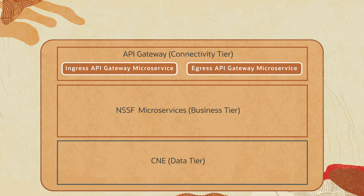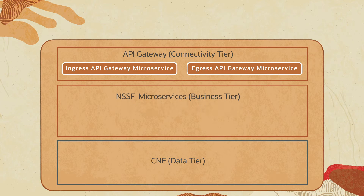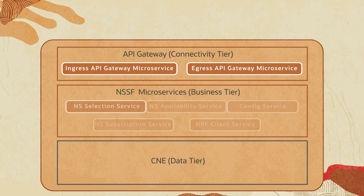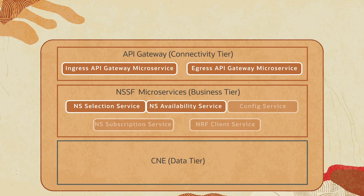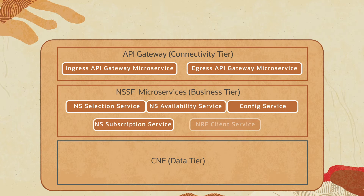The business tier provides the business logic of NSSF. It has NSSelection, NSAvailability, config service, NSSubscription, and NRF Client Microservices.